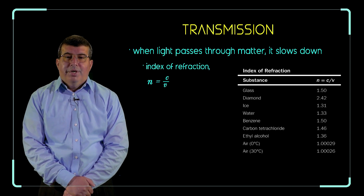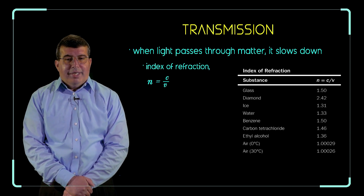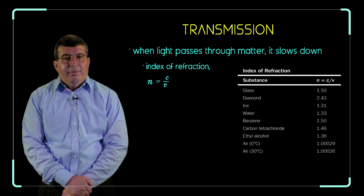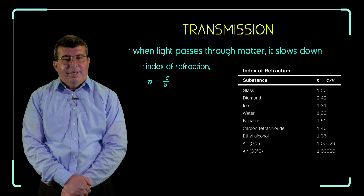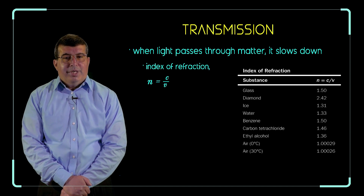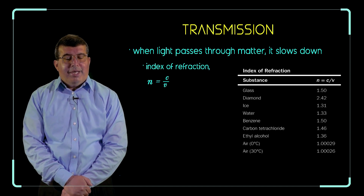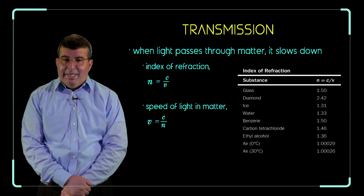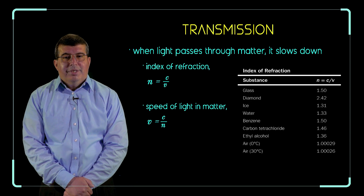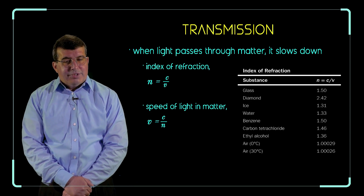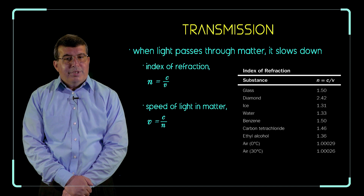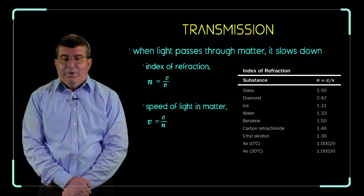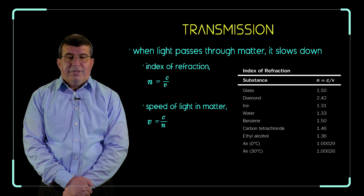From this, we can calculate the speed of light in glass or any type of matter by solving our equation for v. When we do that, v — the speed of light in matter — equals c, the speed of light in vacuum, divided by n, the index of refraction. So the speed of light in glass, for example, is 300 million meters per second divided by 1.5.